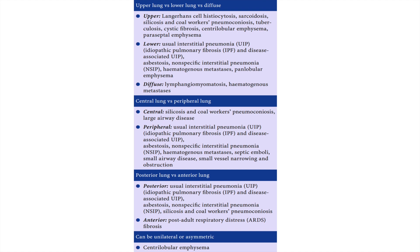The next method by which we can make a diagnosis is looking at the distribution of the decreased attenuation. If it is present more in the upper lung, it deals with Langerhans cell histiocytosis, sarcoidosis, or silicosis. If it is more on the lower side, it is more towards interstitial lung disease. If it is more diffuse, it is lymphangiomatosis or hematogenous metastasis. Comparing central to peripheral lung: if more central, it is mostly because of silicosis or coal worker's pneumoconiosis; if more peripheral, it is again more towards interstitial lung disease. If it is posterior, it is more towards interstitial lung disease, and if it is more anterior, it is because of ARDS fibrosis.